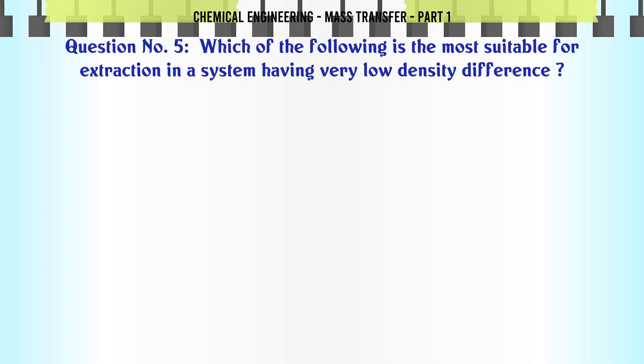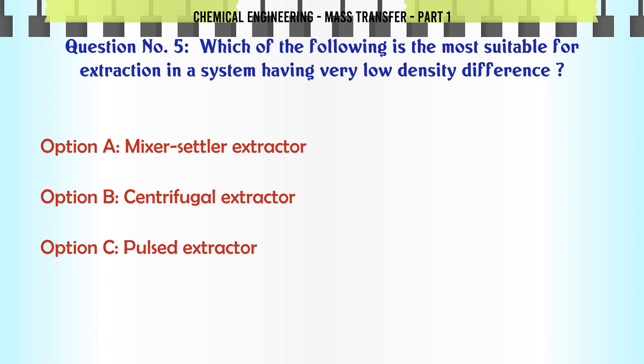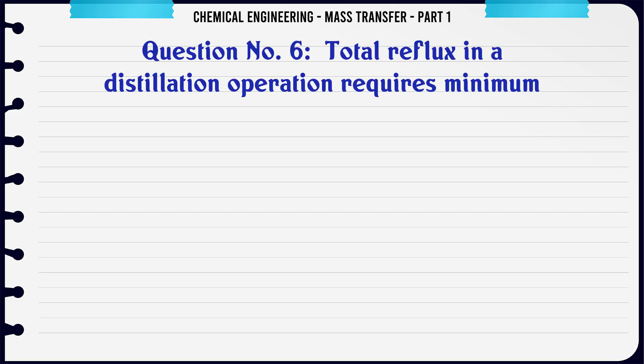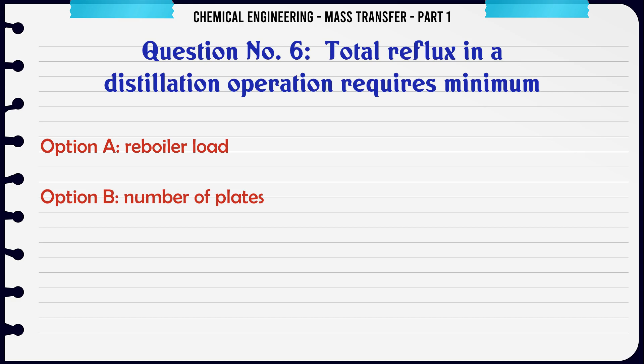Which of the following is the most suitable for extraction in a system having very low density difference? A. Mixer settler extractor. B. Centrifugal extractor. C. Pulsed extractor. D. Packed extraction tower. The correct answer is Centrifugal extractor.